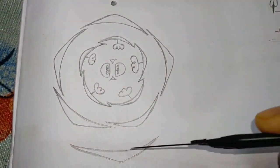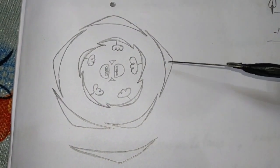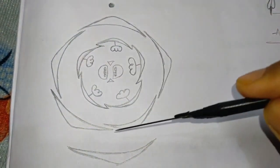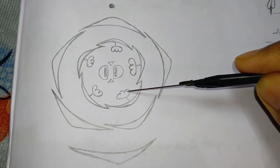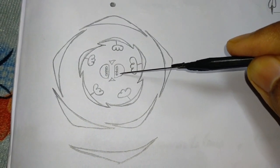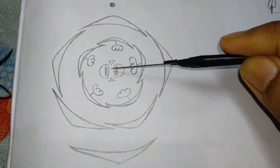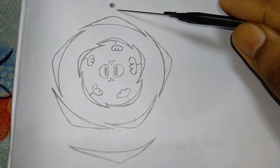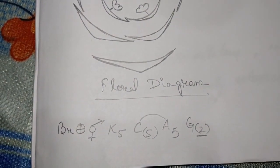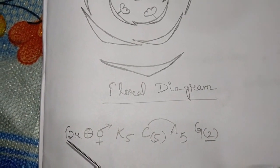This is the floral diagram of the periwinkle flower. This is the bract. The frilly parts are called the petals or corolla. These are the stamens of the periwinkle flower, which are joined with the corolla part. This is the ovary part, these are the two glands, and this is the micropore. This is the floral formula of the periwinkle flower.